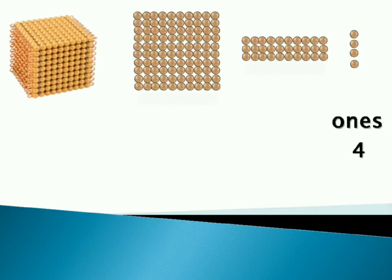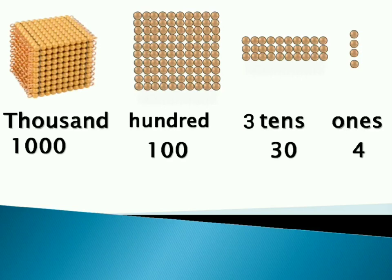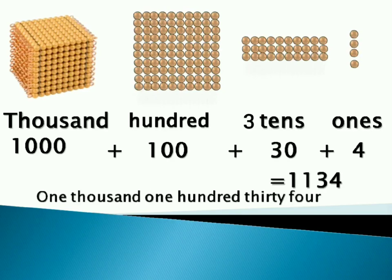Four ones. Three tens means thirty. Hundred means one hundred, and thousand means one thousand. So number becomes 1134. That is one thousand one hundred thirty four. This is the number name, and thousand plus hundred plus thirty plus four is expanded form.